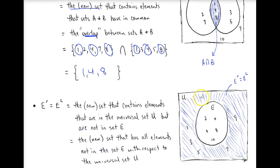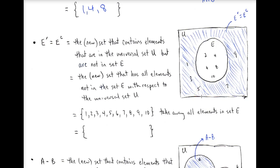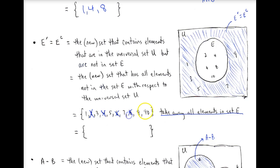Moving on to the complement: the complement of E is the new set that has all elements not in set E, with respect to the universal set. The universal set is all natural numbers from 1 to 10. Since E is all the even numbers from 1 to 10 — {2, 4, 6, 8, 10} — we just get rid of those, and what we're left with is the odd numbers {1, 3, 5, 7, 9}. That is what E complement ends up being.